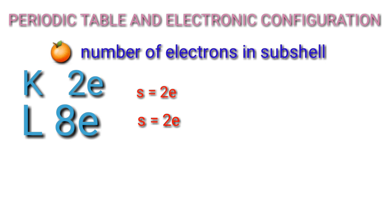S and P is equal to 2. Then R electron — P subshell — total 8 electrons, 2 electrons in S subshell. Balance R electrons go to P subshell.